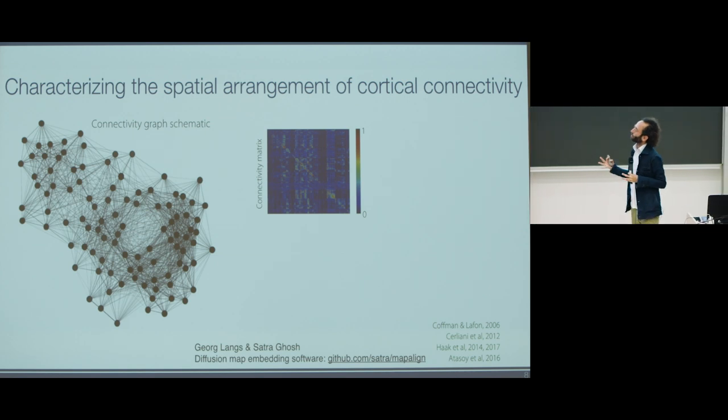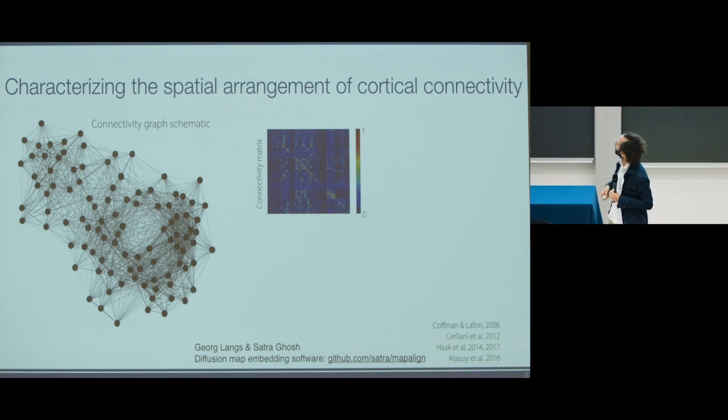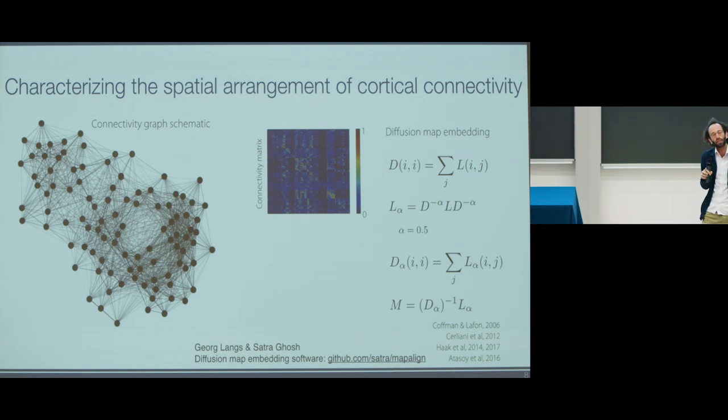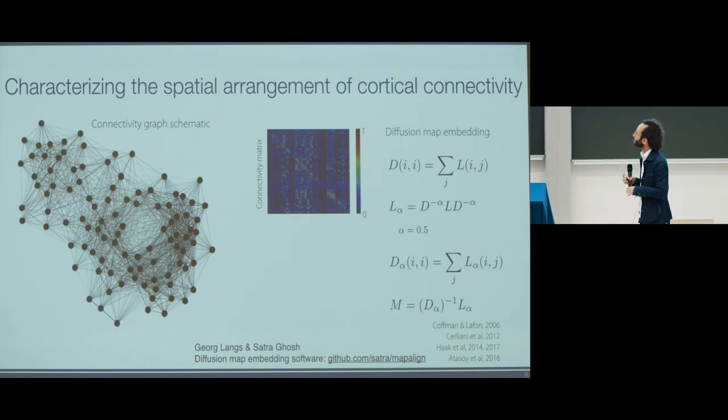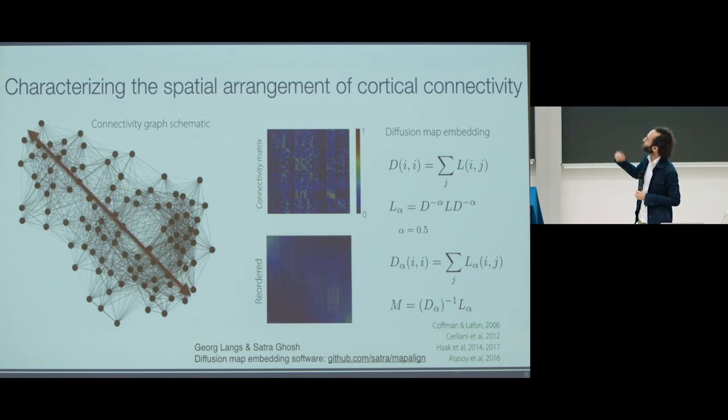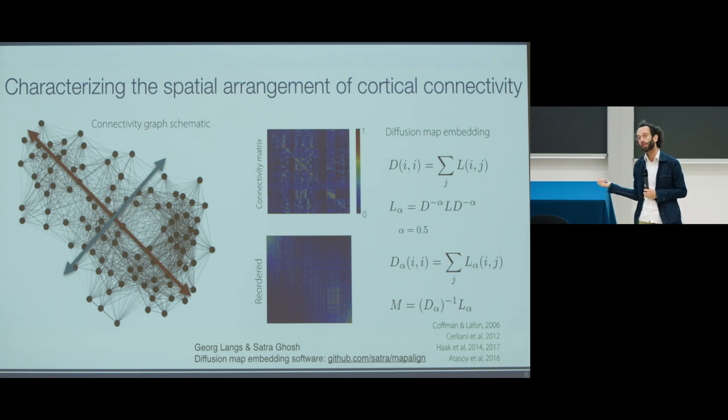The approach we use to characterize these global patterns of connectivity takes the connectivity graph where the position of nodes reflects the similarity of their connectivity patterns. We can reflect that as a connectivity matrix or affinity matrix. Then using a technique called diffusion map embedding, which is a nonlinear decomposition technique, we can capture the maximum variance along several dimensions and map out these components of connectivity or these dimensions of variance. If we apply this to functional connectivity data from the Human Connectome Project, what we observe is quite similar to Mesulam's theory.